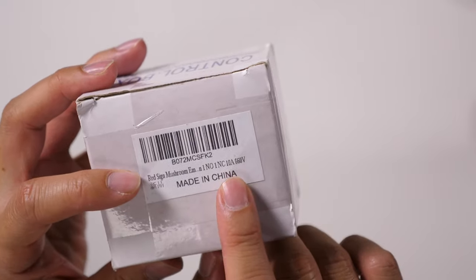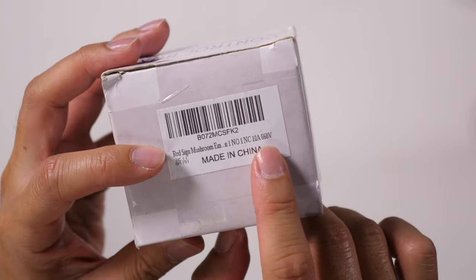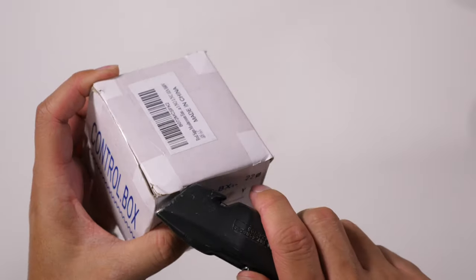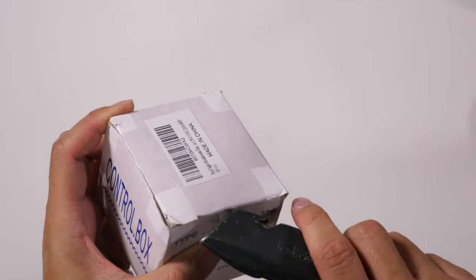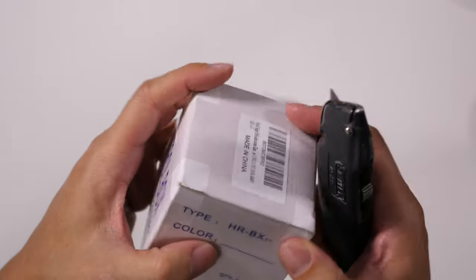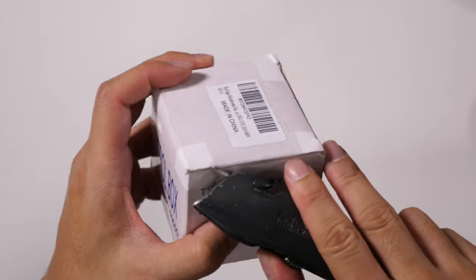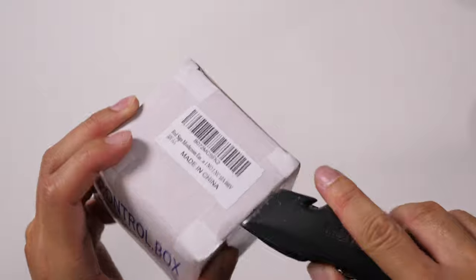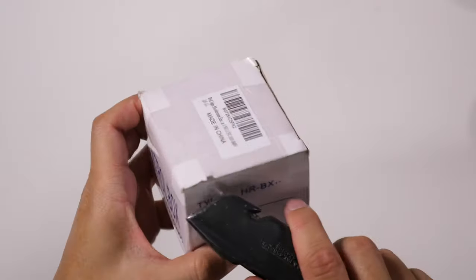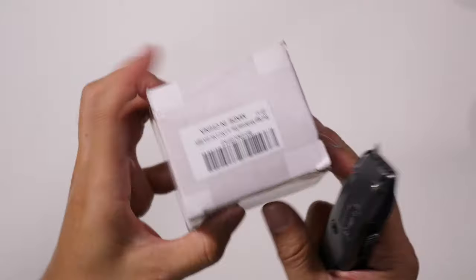It can support up to 10 amps and 660 volts. This is an emergency stop button that you might use if you have some machinery or equipment where you need to have a quick way to shut it off. This is a control box with a big red button that allows you to have an emergency cutoff.